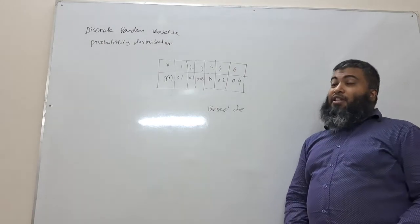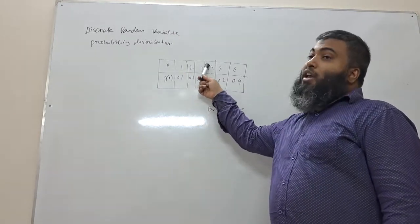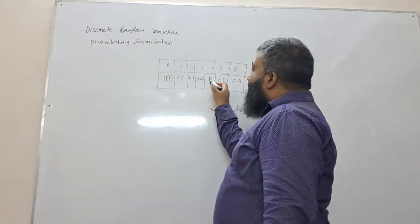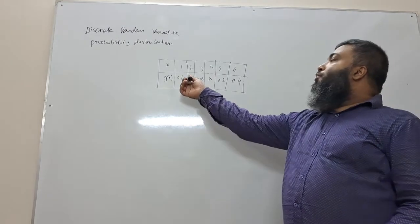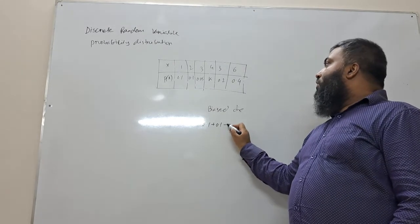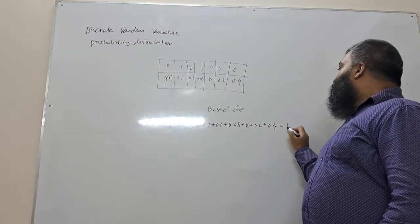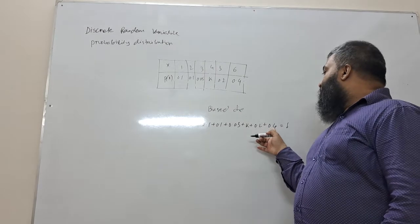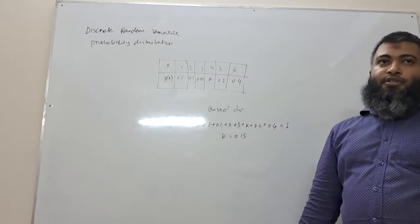From this probability distribution table, we know the sum of all probabilities equals 1. So we have 0.1 plus 0.1 plus 0.05 plus K plus 0.2 plus 0.4 equals 1. Adding these: 0.1, 0.2, 0.4, 0.8, 0.85. Therefore, K equals 0.15.